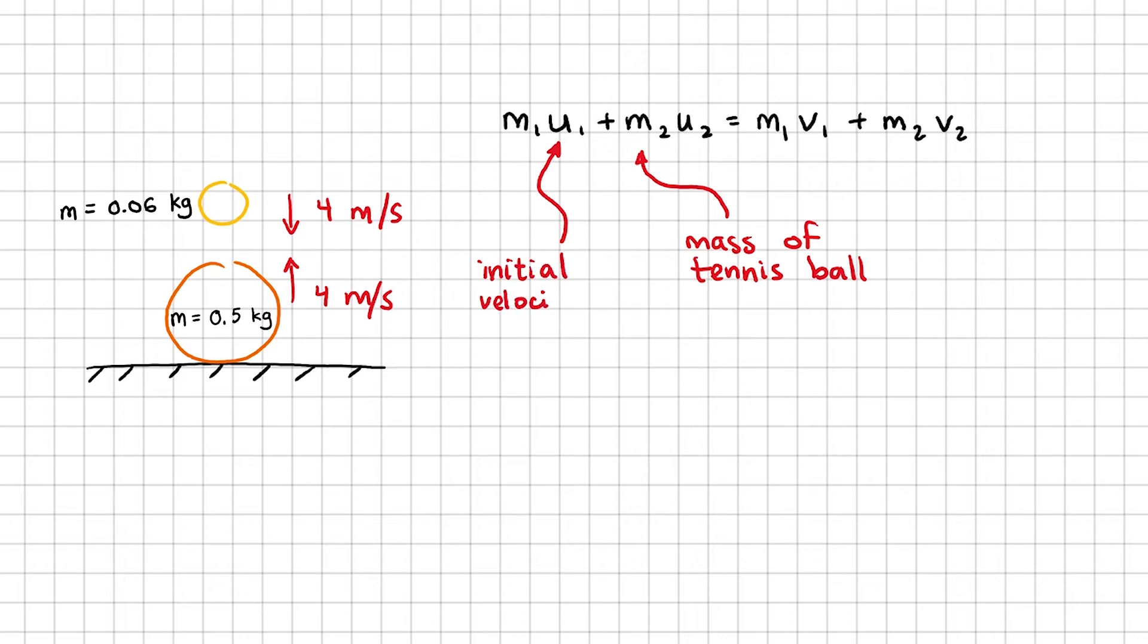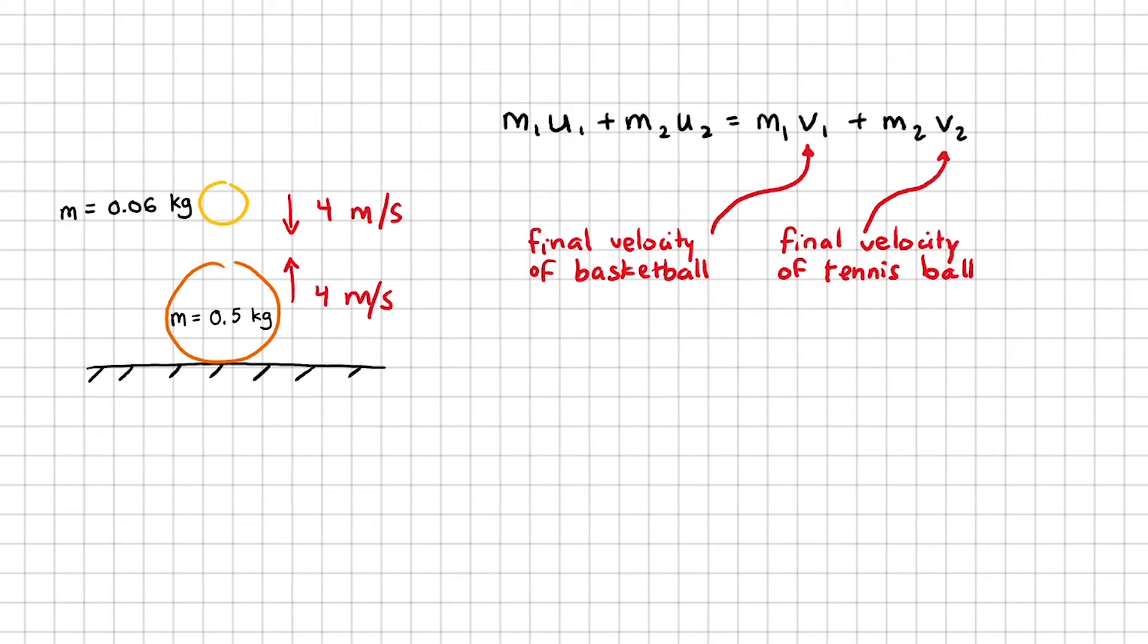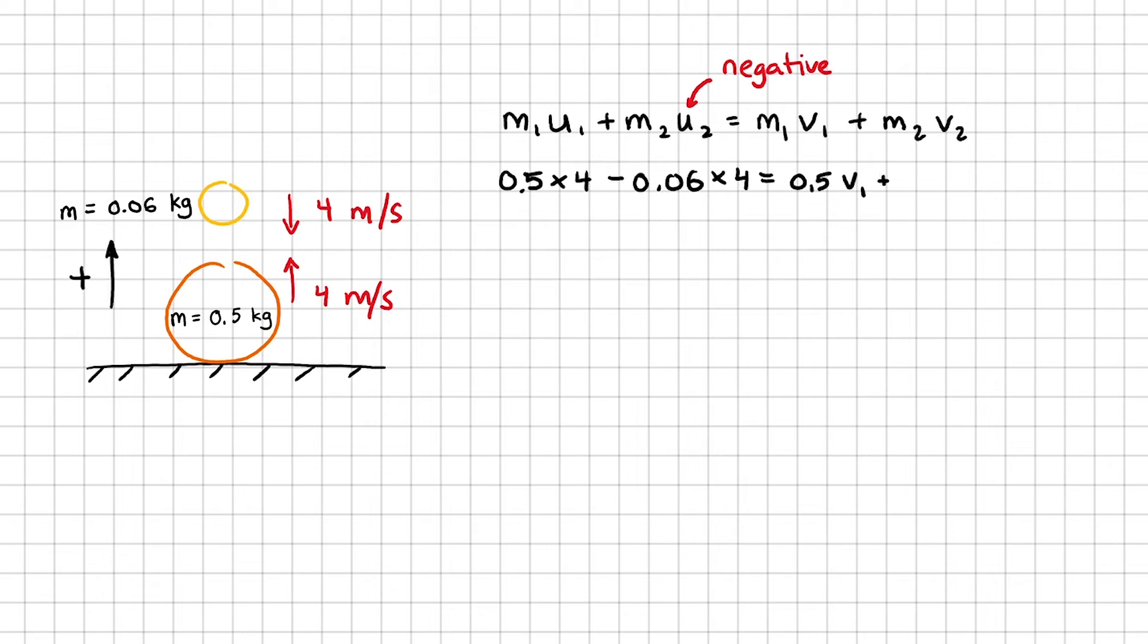U1 is the basketball's initial velocity. U2 is the tennis ball's initial velocity. V1 and V2 are the final velocities after they have collided. Let's substitute some numbers in. If I set the upward direction as the positive direction, I will need to put a minus sign here because the tennis ball's initial velocity points downward. I'm going to go ahead and simplify this. I have two unknowns now in this equation, so I can't solve it yet.